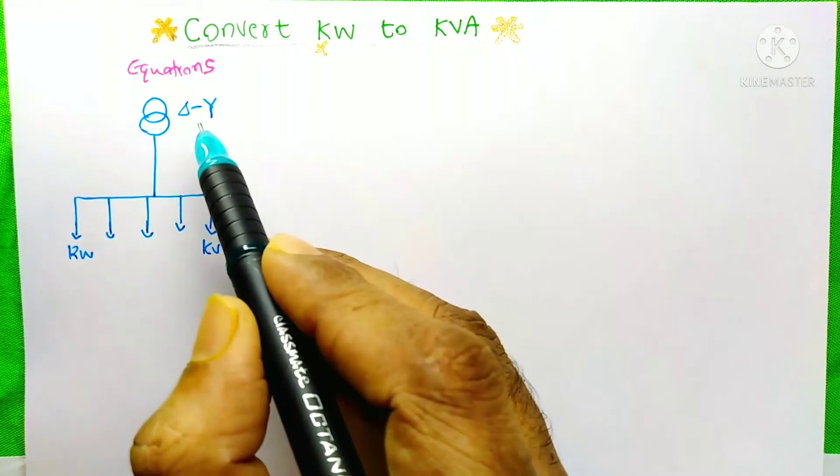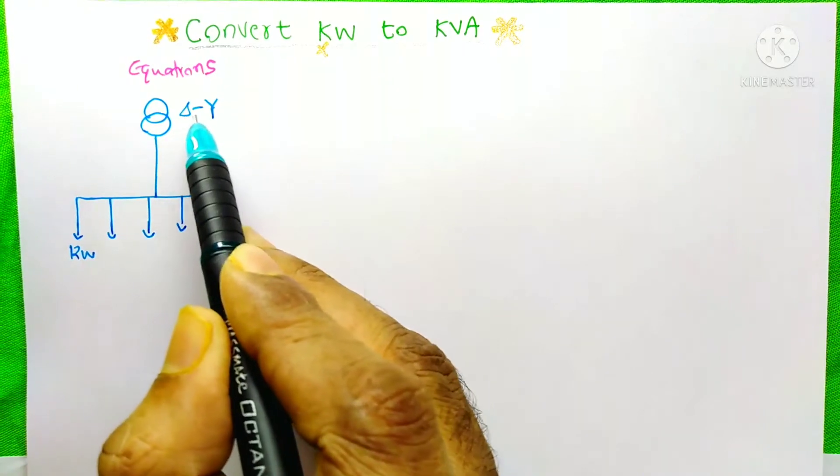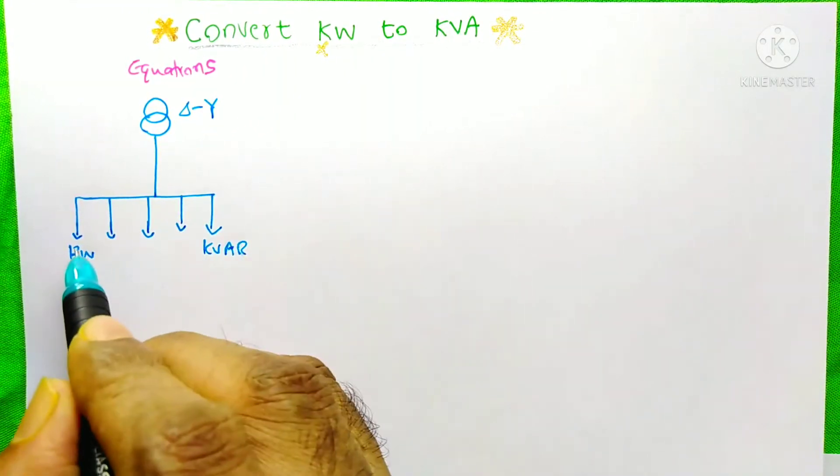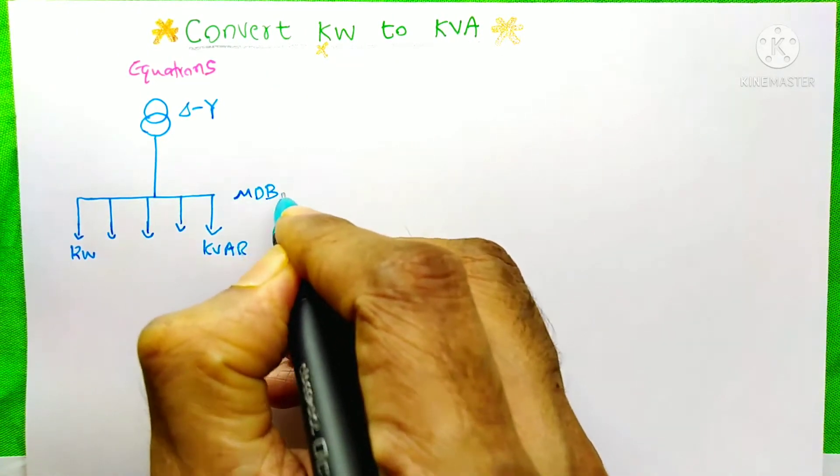Here I am taking an example. In this example we have a transformer here, it is a delta-wye transformer, distribution transformer. And here is a panel, it is an MDB, main distribution board.